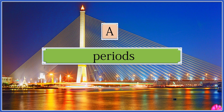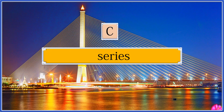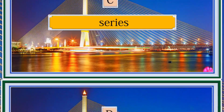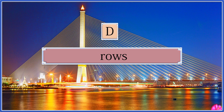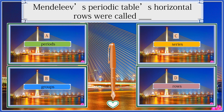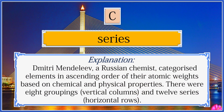Mendeleev's periodic table's horizontal rows were called: groups, series, or rows? The answer is series. Dmitry Mendeleev, a Russian chemist, categorized the elements in ascending order of their atomic weights based on their chemical and physical properties. There were eight groupings — vertical columns — and a trail of series, which are horizontal rows.